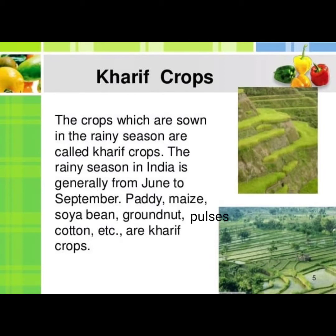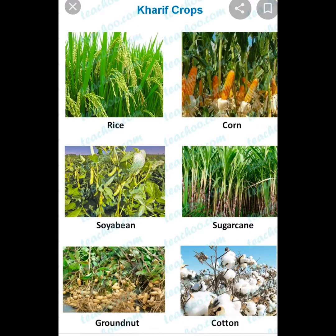This means that our farmer sows this crop in Kharif season, i.e. the rainy season. Now let us see some examples of Kharif crops. These are the Kharif crops like rice, corn, soya bean, sugar cane, groundnut, cotton and sorghum. This is just an example of Kharif crops.